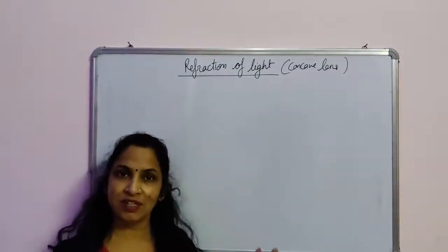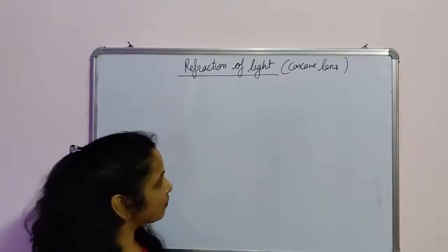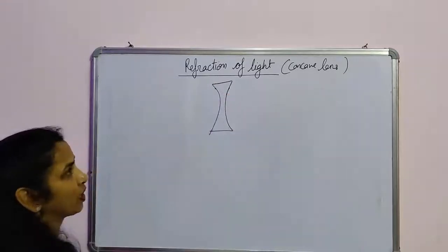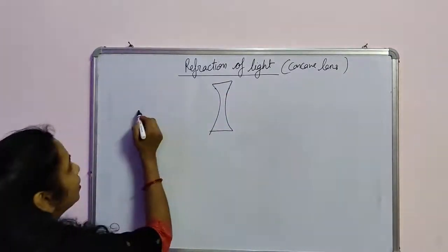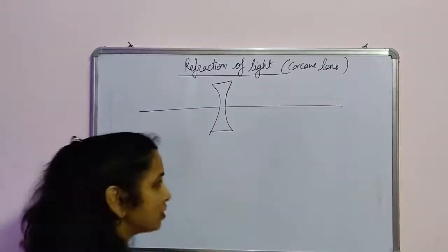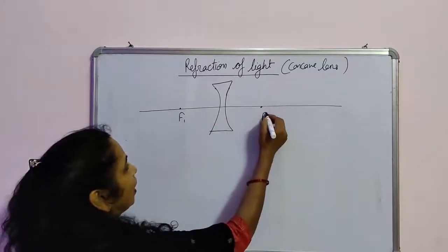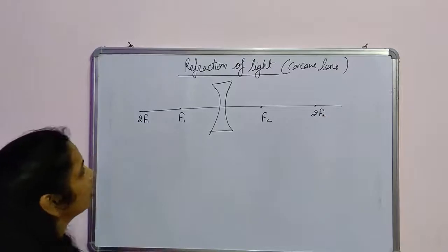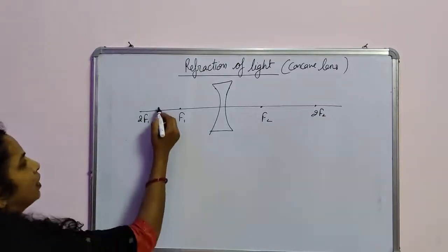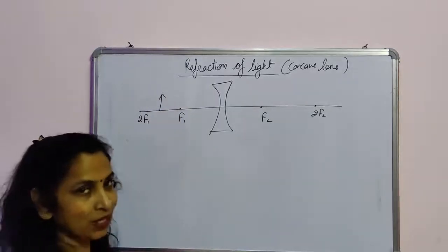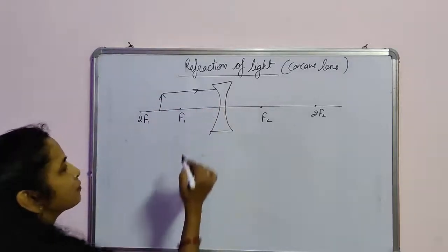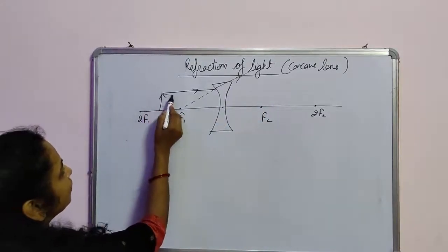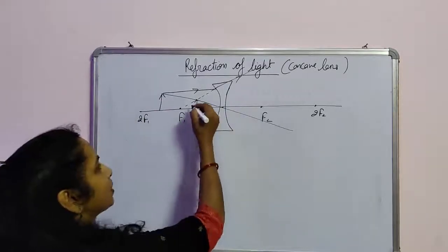First, before going through the numerical, we should know how images are formed by a concave lens. I have explained this in the last lecture, but again I am going to make a figure so you can easily understand the sign convention of the concave lens. A concave lens has two foci on either side: F1 and F2, with 2F1 and 2F2 marking twice the focal length. If you place an object anywhere, one ray parallel to the principal axis will appear to diverge from its focus, and the other will pass through the optical centre straight without any deviation. This is the image formed by the concave lens.